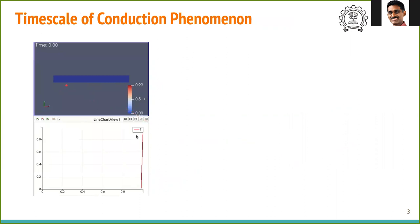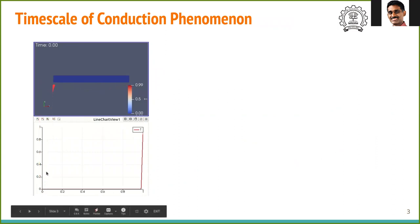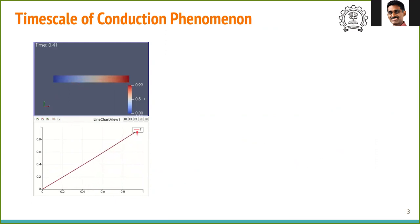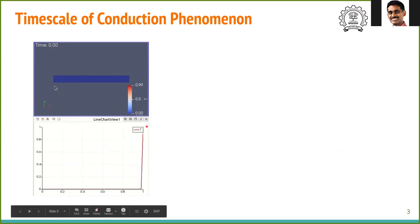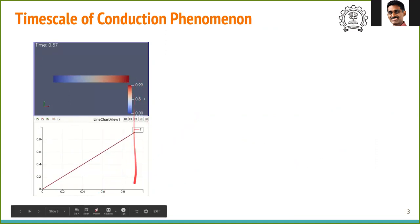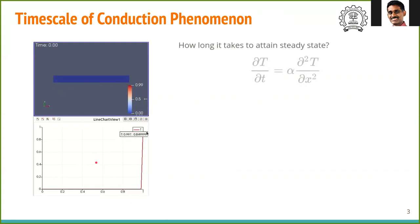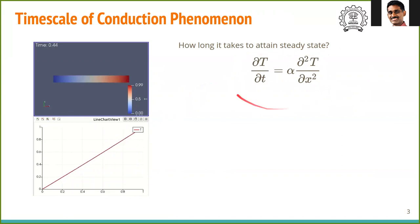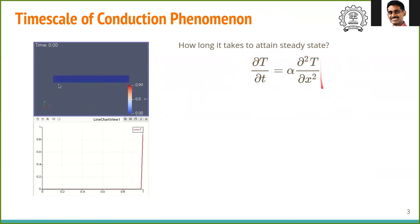Consider a body initially at temperature one on one side and zero on the other side, and observe how temperature diffuses across it. The temperature which was initially one diffuses throughout, eventually giving a linear variation from one end to the other. If we want to ask how long it takes to reach this steady state, the equation to solve is ∂T/∂t = α ∂²T/∂x². Without even solving it, we can estimate the time scale by scaling analysis.